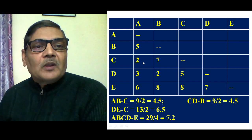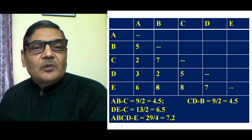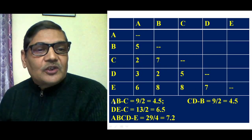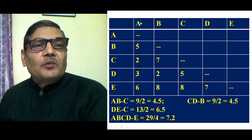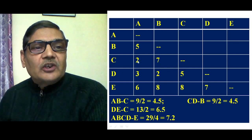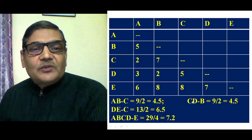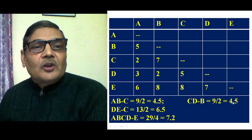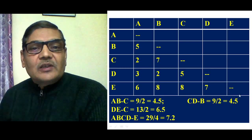UPGMA is the way to construct this evolutionary tree. In the table, we find the distance between the AB cluster and C: 7 plus 2 equals 9, divided by 2 gives 4.5. Likewise, the distance between the CD cluster and B also comes to 4.5.